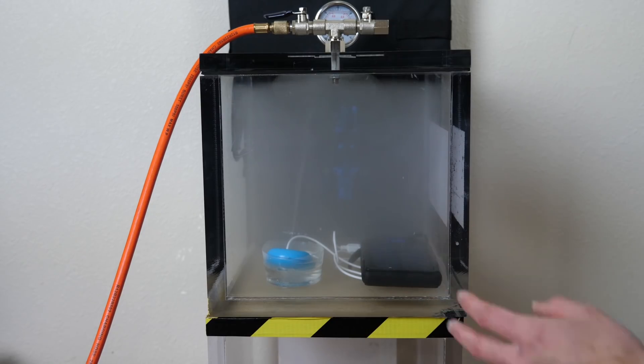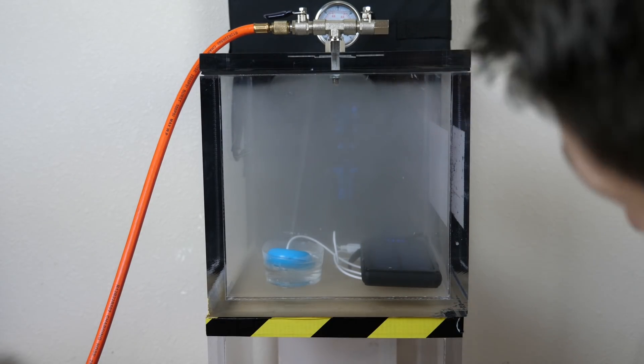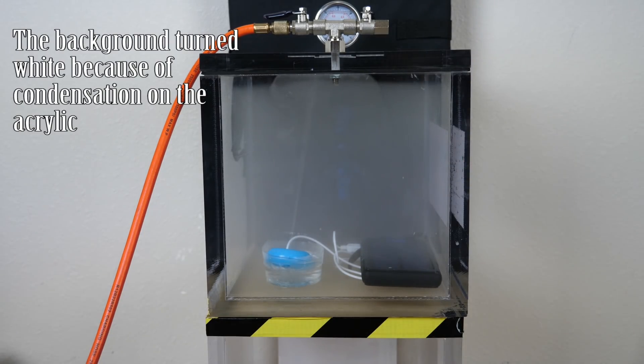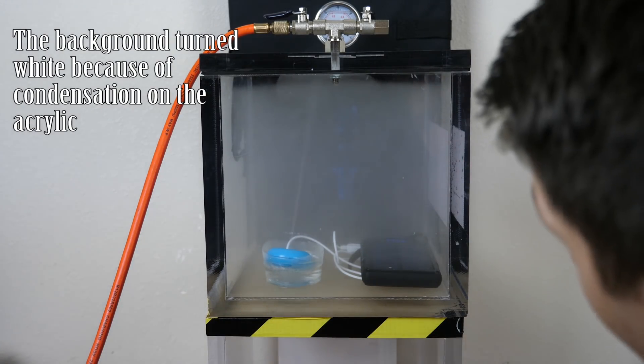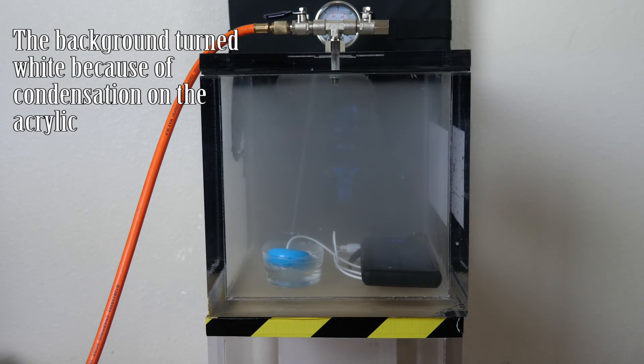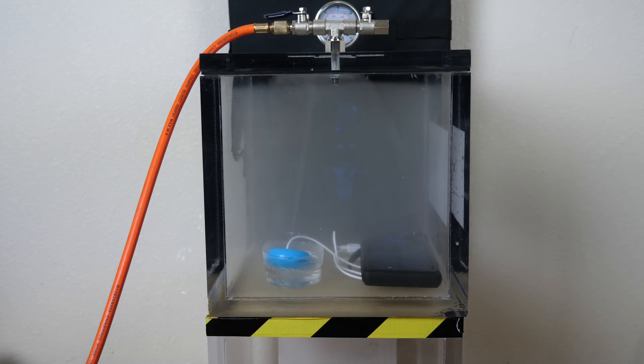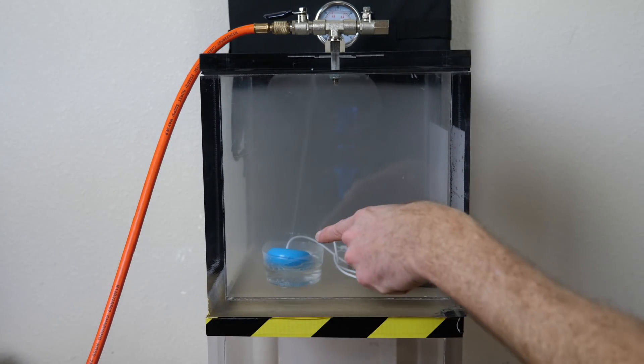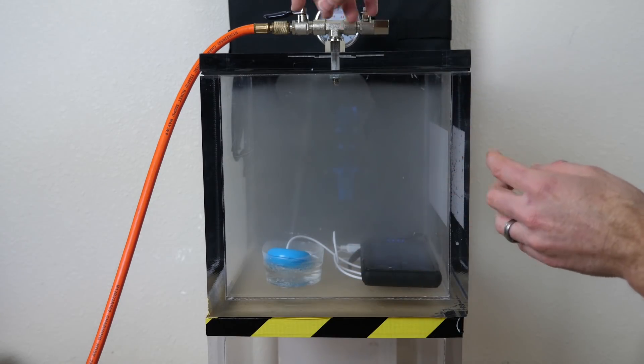We're at 0.2 atmospheres. It's not looking as cloudy in there. Whoa. It's becoming like this gun of mist. It's like a ray of mist coming straight out of the center. Look, it's just shooting it straight out of the center and the mist hits the top here and then just falls down. We're at 0.1 atmospheres.